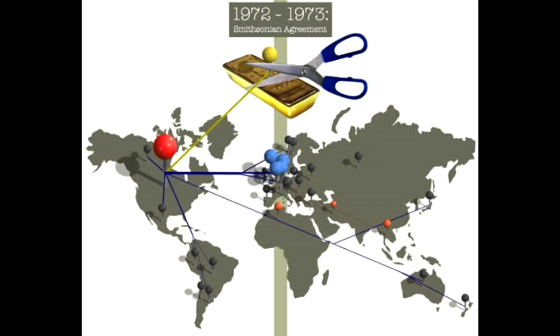After the Bretton Woods Accord came the Smithsonian Agreement in December of 1971, which was similar but allowed for a greater fluctuation band of the currencies. The United States pegged the dollar to gold at $38 per ounce, thereby depreciating the dollar. Under the Smithsonian Agreement, other major currencies could fluctuate by 2.25% against the US dollar.